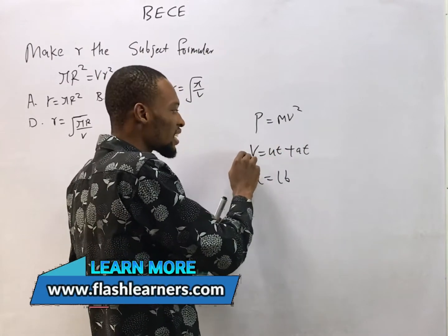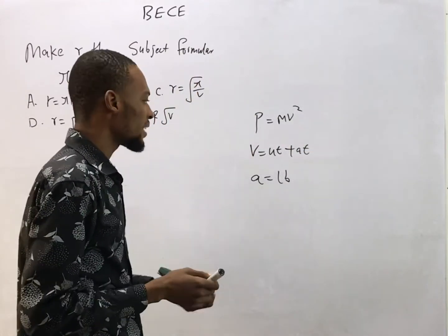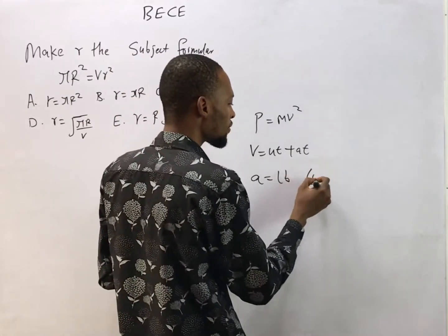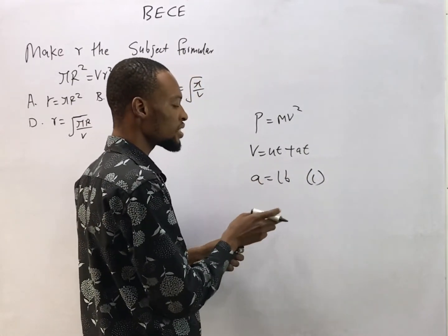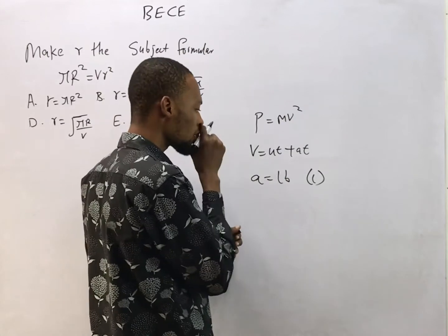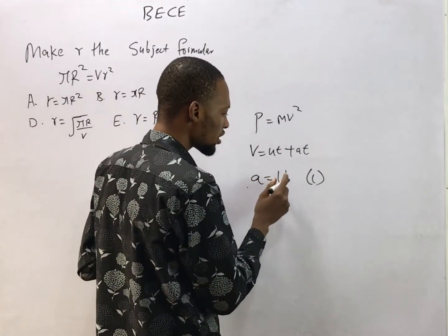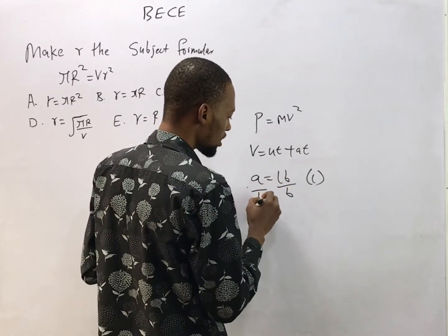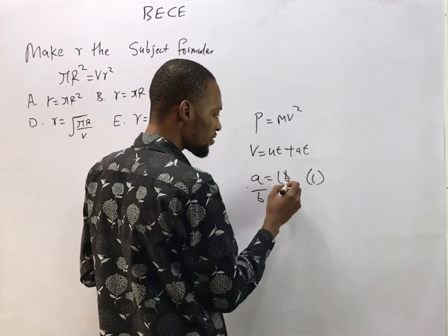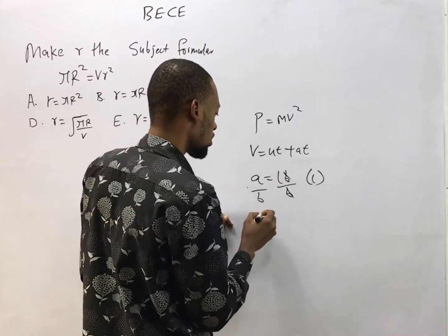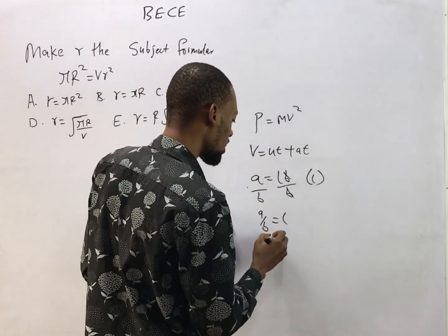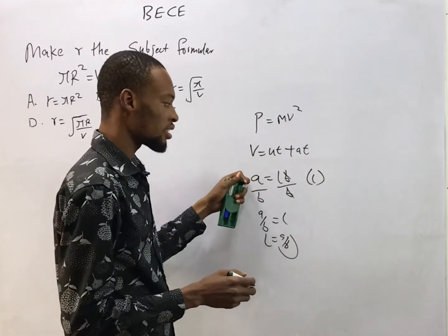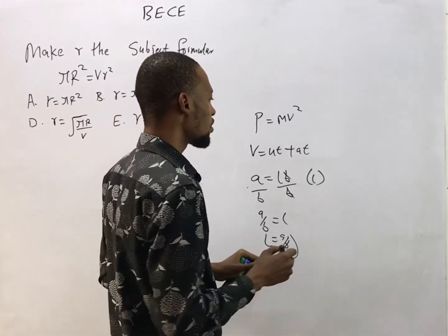That's what change of subject formula is about. If you are making L the subject formula here, I'm changing the subject from A to L. To make L stand alone, divide both sides by b — b divided by b gives you one — so A over b equals L, and L equals A over b. With this, I've made L the subject formula in this equation.